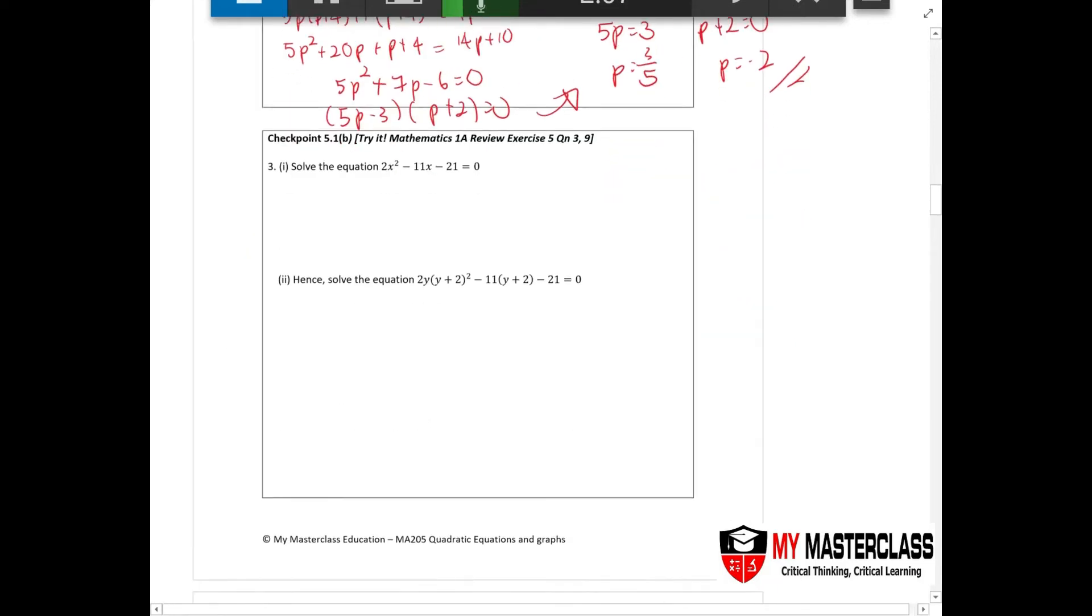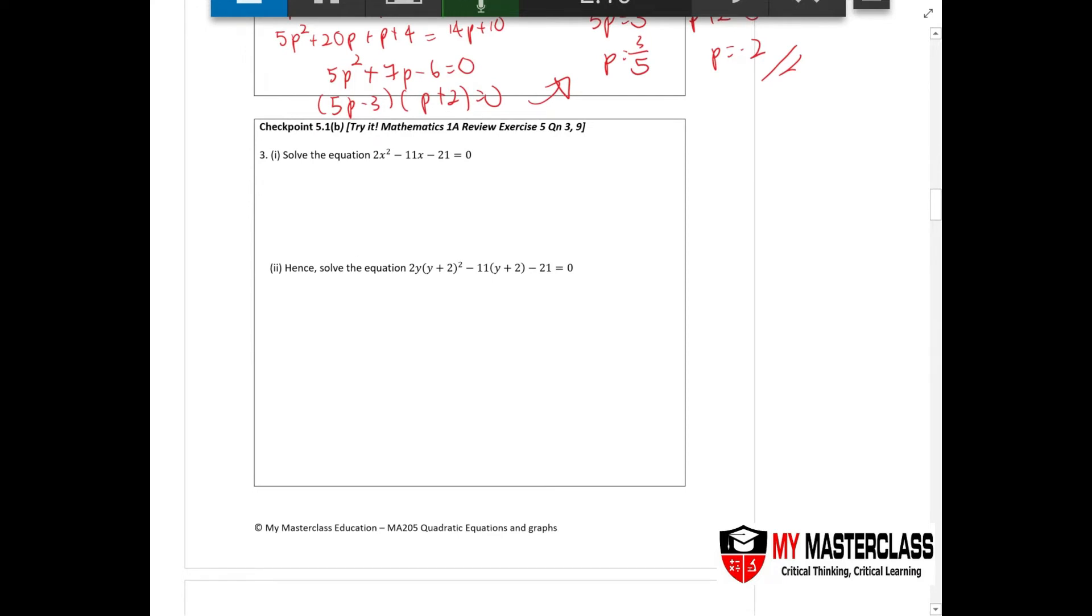Now moving forward, let's take a look at checkpoint 5.1 part b. They're asking you to solve for these equations. Again use the method that you prefer. You realize that it is always the same - factorization, solving. I've mentioned the difference is whether you find the value of x or do you just factorize them first. Pressing your calculator, you should have x minus 7, 2x plus 3 equals to 0. Don't just stop here because this is not a factorized question. So you apply x equals to 7 or 2x plus 3 equals to 0, x equals to negative 3 over 2.